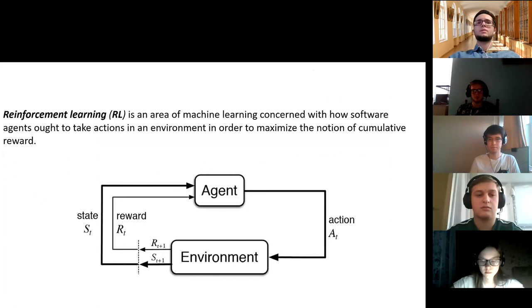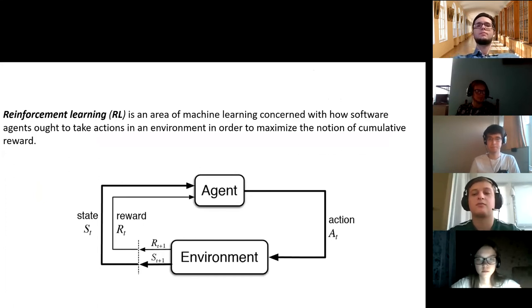Reinforcement learning, or RL, is an area of machine learning related to how software agents should take action in the environment in order to maximize the concept of cumulative rewards.